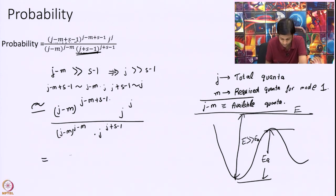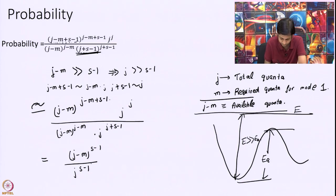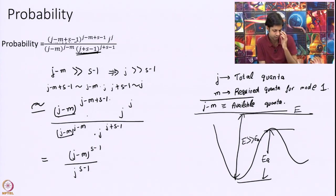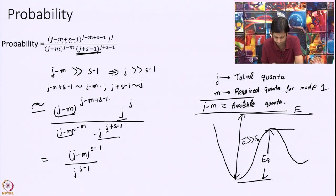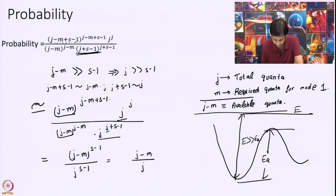This is then equal to (j − m)^(s−1) divided by j^(s−1), which simplifies to ((j − m) / j) to the power of s − 1. Things have simplified a lot now.